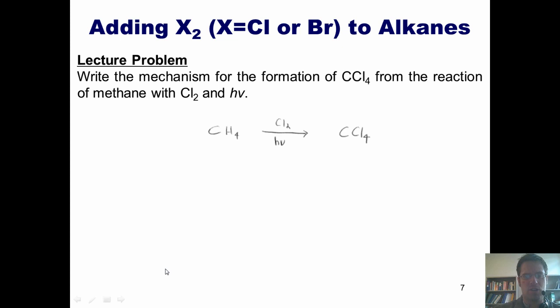So here's the overall reaction: converting methane, this molecule here, to carbon tetrachloride using chlorine gas and light. How in the world does that proceed? Well, as I've showed you before, the first step is initiation. I've got my chlorine gas, and each of these separate chlorine atoms takes one of these two electrons to itself, as indicated here using these half-barb arrows, to form two separate molecules of chlorine radical. This is the initiation step.